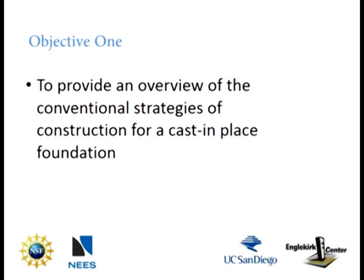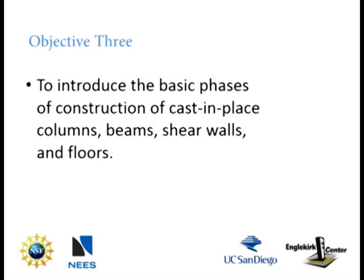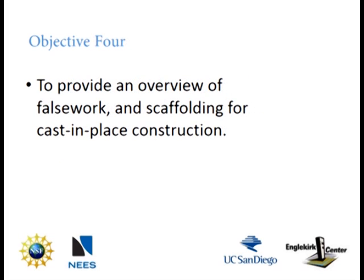Objective 1: to provide an overview of the conventional strategies of construction for a cast-in-place foundation. Objective 2: to provide an overview of strategies used in preparing and installing conventional rebar and high-strength post-tensioning tendons for cast-in-place construction. Objective 3: to introduce the basic phases of construction of cast-in-place columns, beams, shear walls, and floors. Objective 4: to provide an overview of falsework and scaffolding for cast-in-place construction.